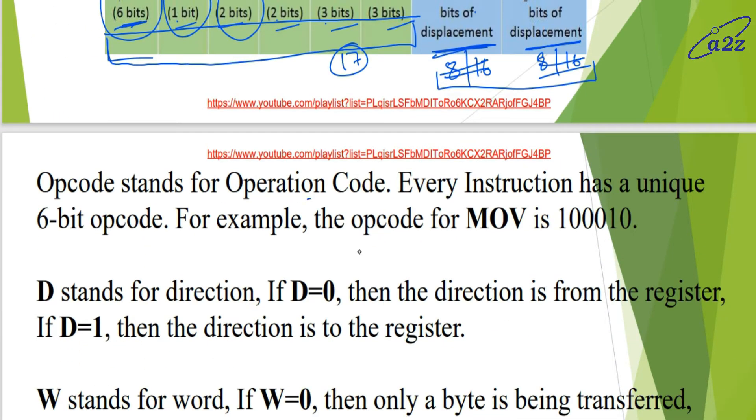Now, opcode stands for operation code. Every instruction has a unique 6 bit opcode. For example, opcode for move instruction - the opcode will be 100010. Again, it is of 6 bit. So here 6 bits should be there. This opcode is for move. Similarly, there will be add instruction. For add, there may be some other opcode. So for each instruction, different opcode will be mentioned. And these opcodes will be provided with the 8086 instruction set.